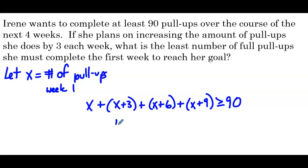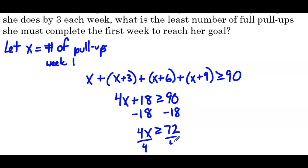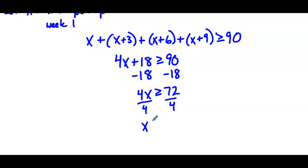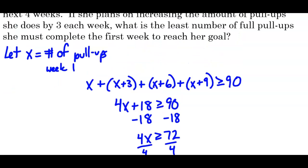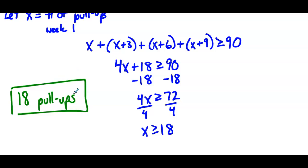Simplifying the left side: 4x plus 18 is greater than or equal to 90. Subtract 18 from both sides — 4x is greater than or equal to 72. Divide both sides by 4 — x is greater than or equal to 18. So the least number of full pull-ups she must complete is 18. If she does 18 pull-ups the first week and increases by 3 each week thereafter, she'll reach her goal of completing at least 90 pull-ups.